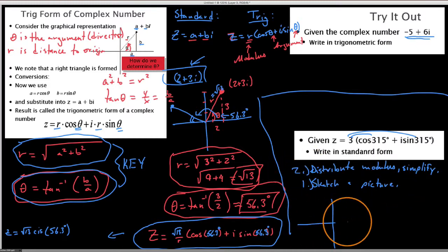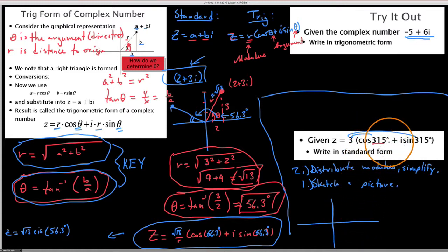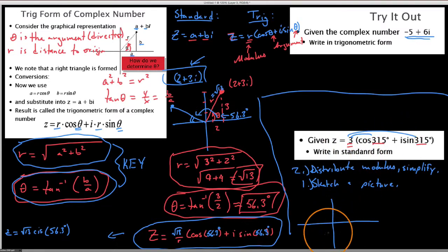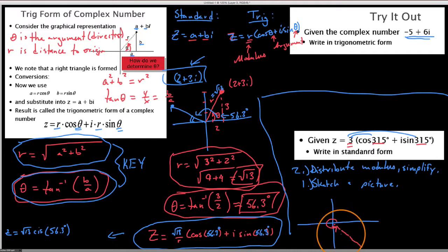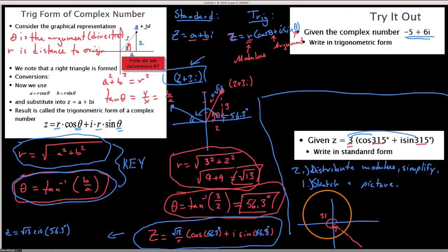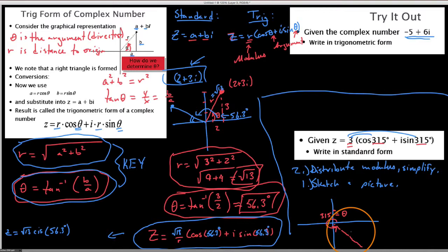If we envision the trig form number, we're being told a direction and a distance — r and theta. If we're heading in a 315 degree direction, starting from the initial side going around 315 degrees, that's splitting the difference between 270 and 360. So this is the 315 degree direction angle, and we're going 3 units out from the origin.